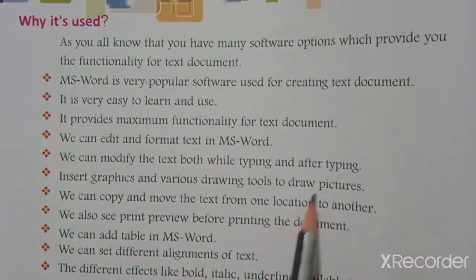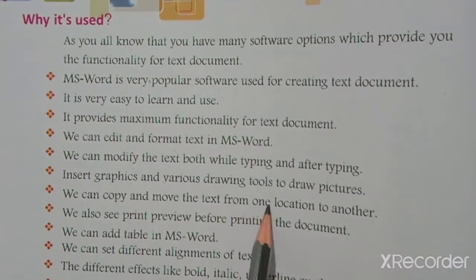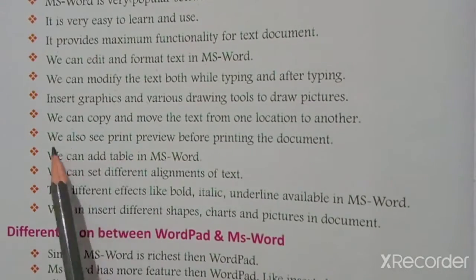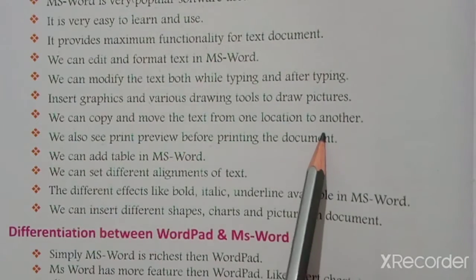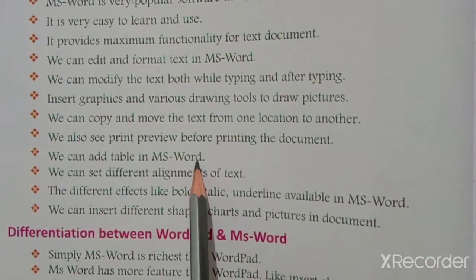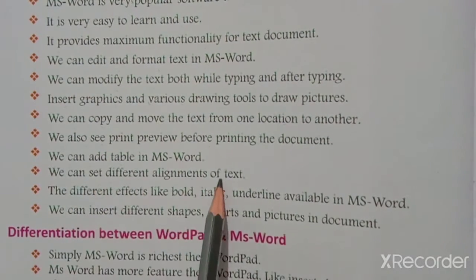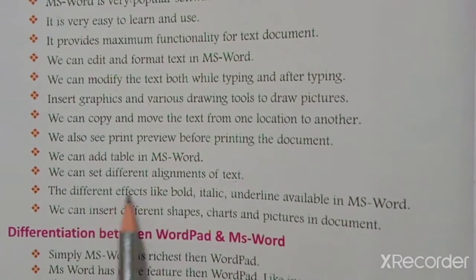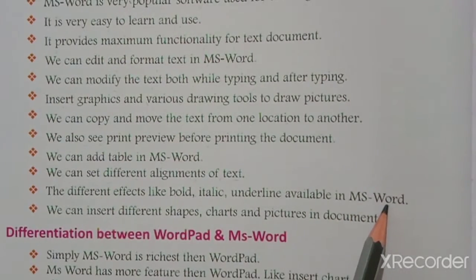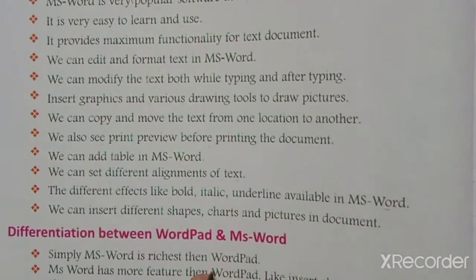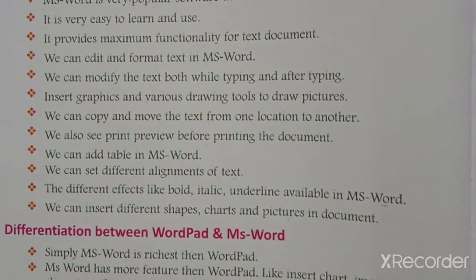We can copy and move text from one location to another. We can also see a print preview before printing the document. We can add tables in MS Word. We can set different alignments of text — left, right, center, or justify. Different effects like bold, italic, and underline are available. We can insert different shapes, charts, and pictures in documents.